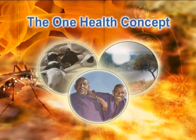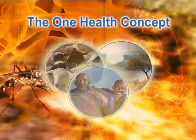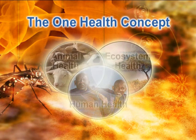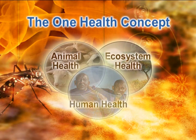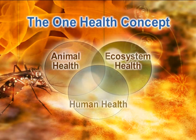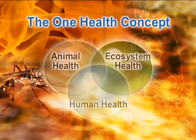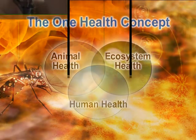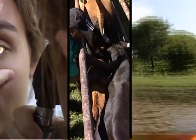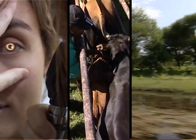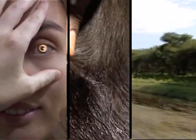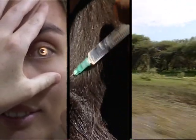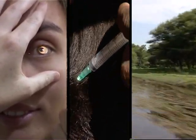Rift Valley Fever is a good example of a disease where the principles of the One Health concept are applicable. Proper studies or control strategies of Rift Valley Fever require a more integrated or holistic approach to human, animal, and ecosystem health, and collaborative efforts of multidisciplinary teams working nationally and internationally.